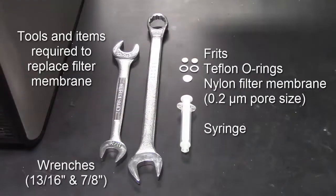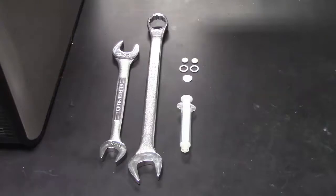The tools required to open the housing unit and replace the filter membrane include two wrenches, two new frits, two new Teflon O-rings, one new filter membrane, and a syringe to help remove the old filter.